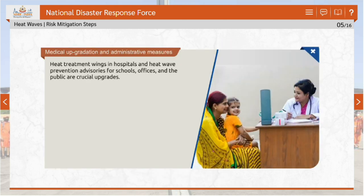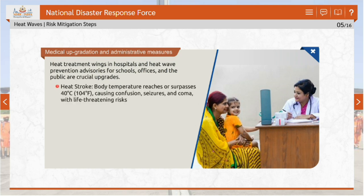Heat treatment wings must be created in hospitals, and an advisory on how to prevent exposure and other heat wave related injuries must be circulated in schools, offices and the public at large. Heat stroke is when your body temperature rises to 40 degrees Celsius (104 degrees Fahrenheit) or more, causing confusion, seizures or coma.